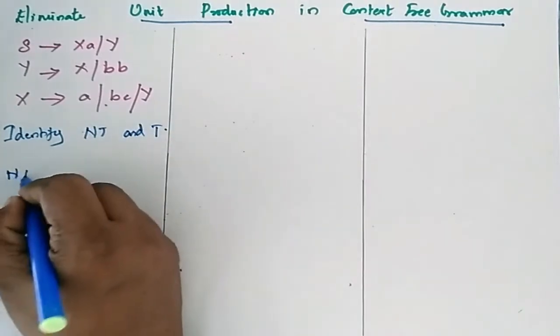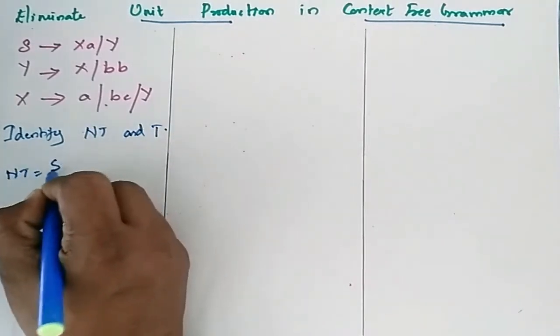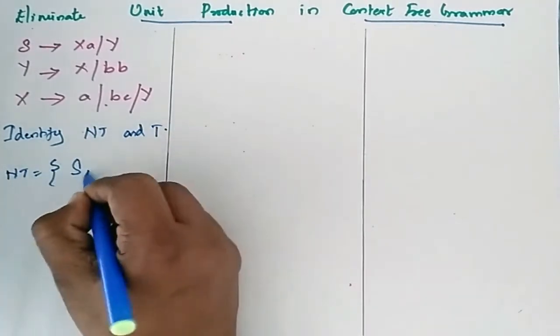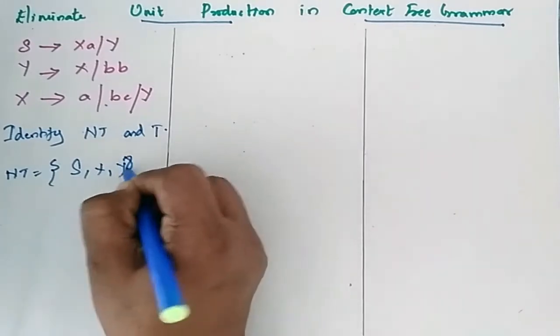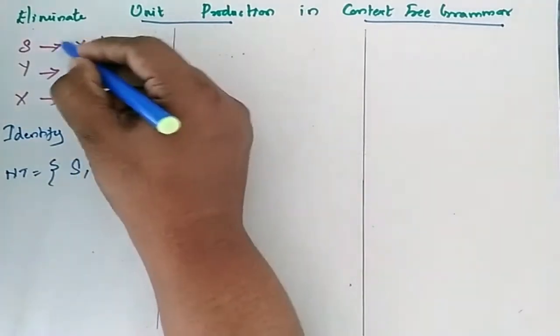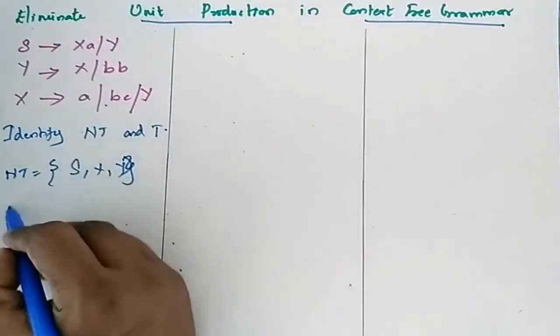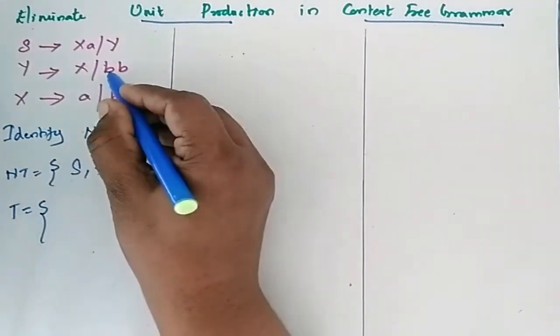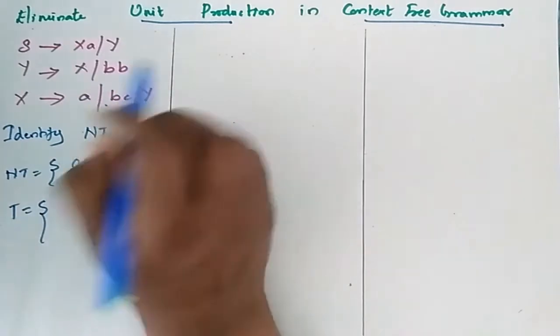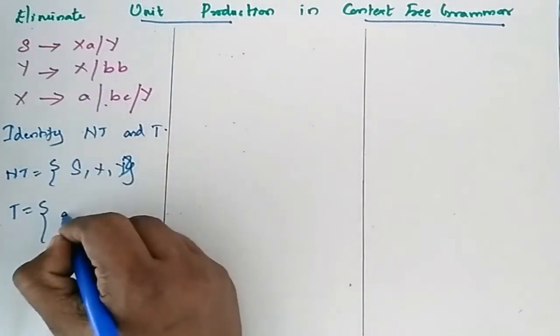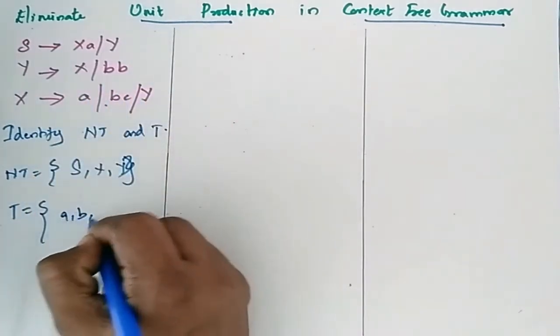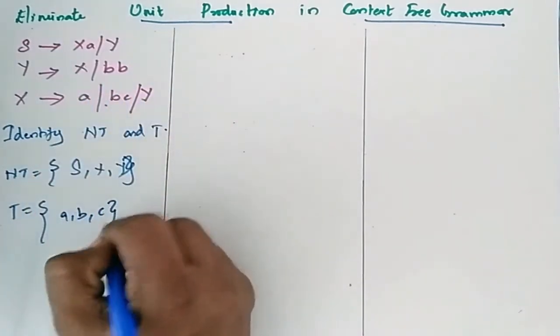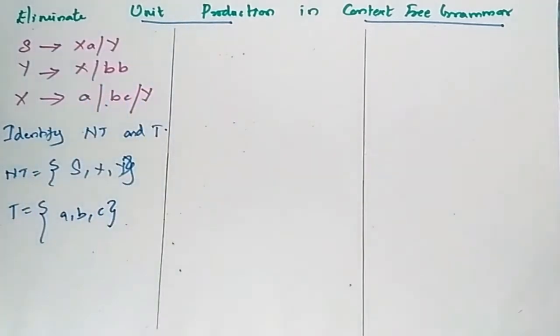The non-terminals here are S, X, and Y. When you come across terminals, they are A, B, and C. So these are the terminals and non-terminals.